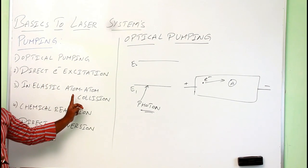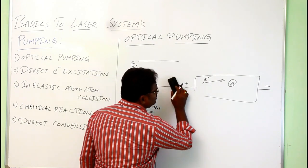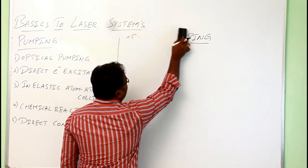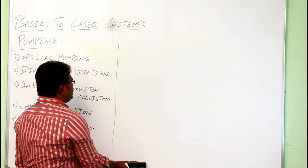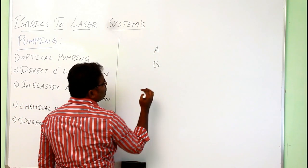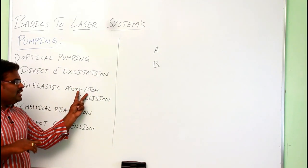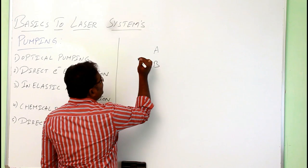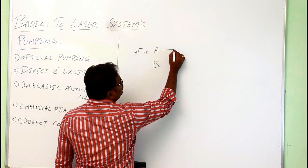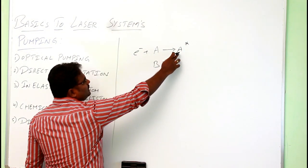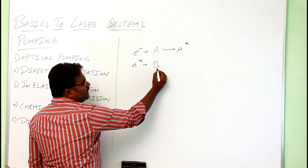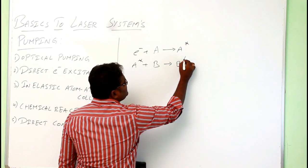The third type is inelastic atom-to-atom collision. Inelastic means there is no loss of energy due to the collision. In this process, we take two atoms, A and B. We first excite atom A by colliding it with a fast-moving electron, so atom A goes to the excited state. The excited atom A then collides with atom B, which is in the ground state, and atom B goes to the excited state.